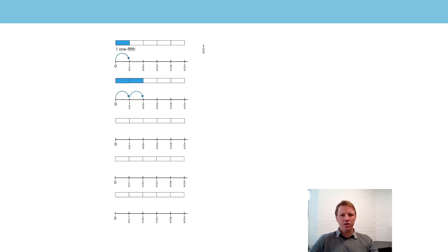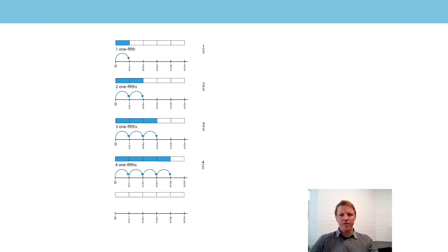Let's continue the pattern. This time two of our equal parts are shaded, so it is two fifths — two one-fifths, written as two over five. Then three one-fifths, written as three over five. Four one-fifths, four over five — and we can see where four fifths sits on our number line. And finally, we've shaded in all of the parts. So this is five one-fifths, written as five as the numerator and five as the denominator. And that's the part I want us to focus on.